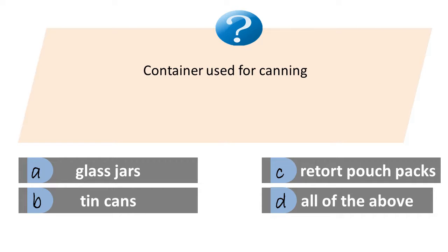Containers used for canning: A) glass jars, B) tin cans, C) retort pouch packs, D) all of the above. The answer is D, all of the above.